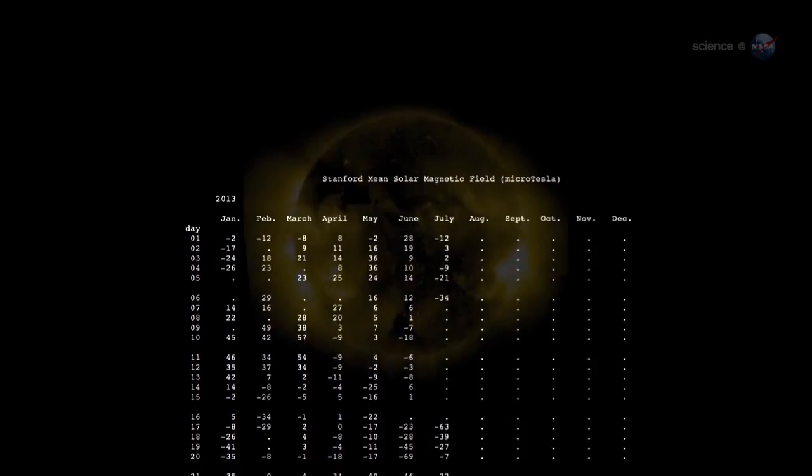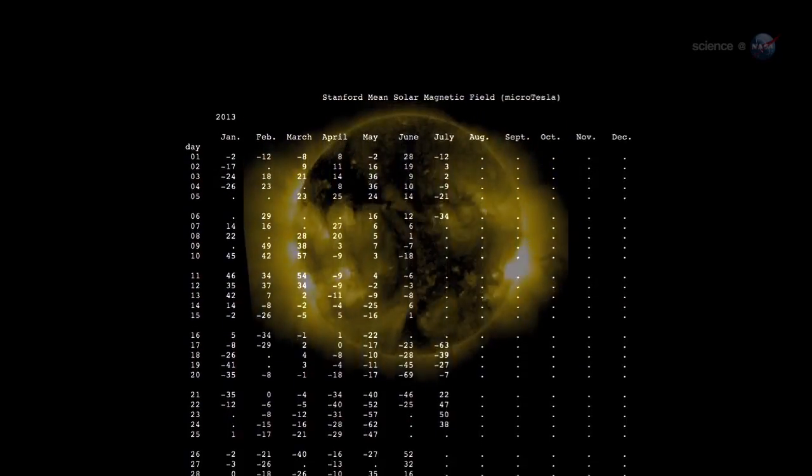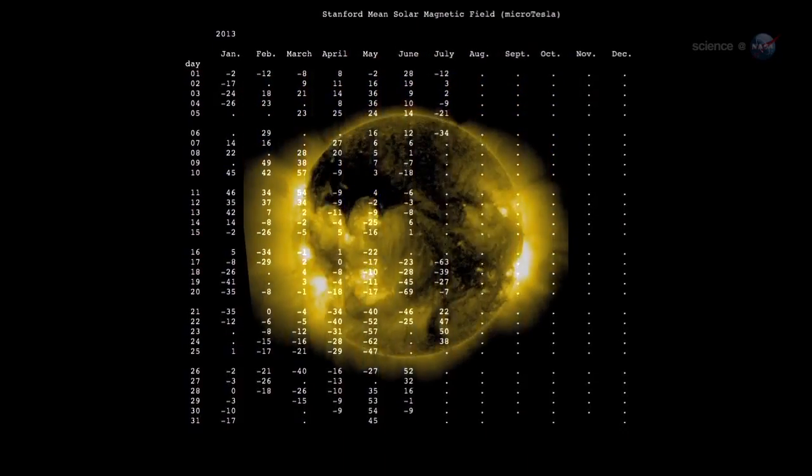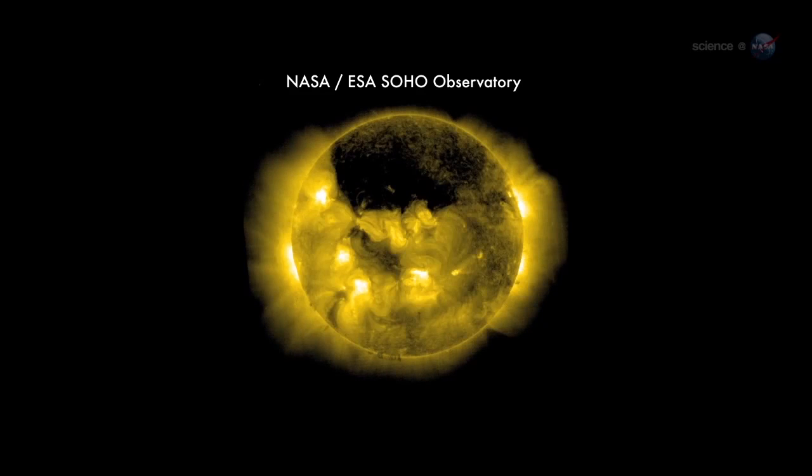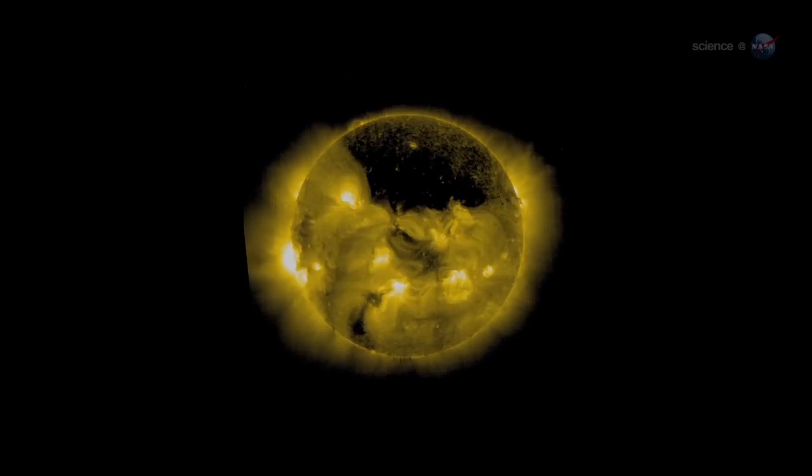As the field reversal approaches, data from Wilcox show that the Sun's two hemispheres are oddly out of sync. The Sun's North Pole has already changed sign, while the South Pole is racing to catch up, says Shearer.